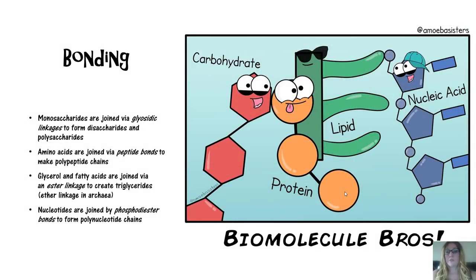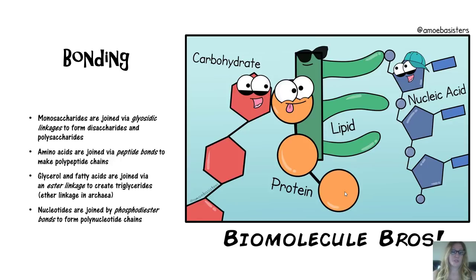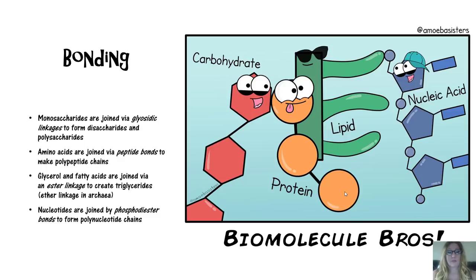It's important to know what types of bonds form these important molecules. Monosaccharides are joined via a glycosidic linkage or glycosidic bond. Amino acids join via peptide bonds. Glycerol and fatty acids are joined using ester linkages or ester bonds — except in archaea, which uses ether bonds instead. This is true for phospholipids as well as triglycerides. Nucleotides are joined together using phosphodiester bonds.